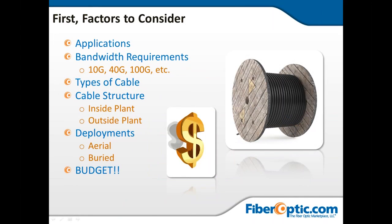There are about six factors to consider when you have to pick cable. Application is one of them — what are you going to use it for? Is it going to be inside or outside, in a building or underground? Bandwidth requirements: how much data are you going to be sending down this cable? Are we starting at 1G, 10G, or planning to expand to 100G down the road? Future expandability is one of the things you want to look at when it comes to bandwidth.